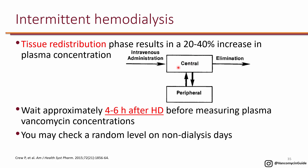However, if you wait about two to three hours, vancomycin starts to come out of peripheral tissue to re-establish equilibrium between blood and peripheral tissue. So if you get a level immediately after dialysis, the level could be artificially low, and then three hours later the level goes back up. Therefore, it is recommended to wait approximately four to six hours after hemodialysis for tissue redistribution to be complete, then obtain a vancomycin level, which gives a better indication of the true level in the patient.